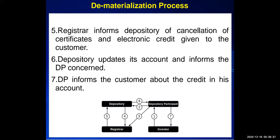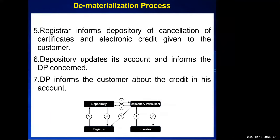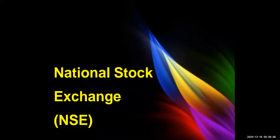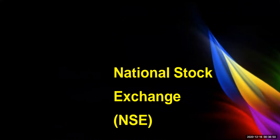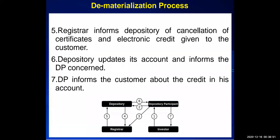The registrar informs the depository of cancellation of certificates and the electronic credit given to customers. The registrar also updates its account and informs the DP concerned. The depository participant then informs the customer about the credit in his account.